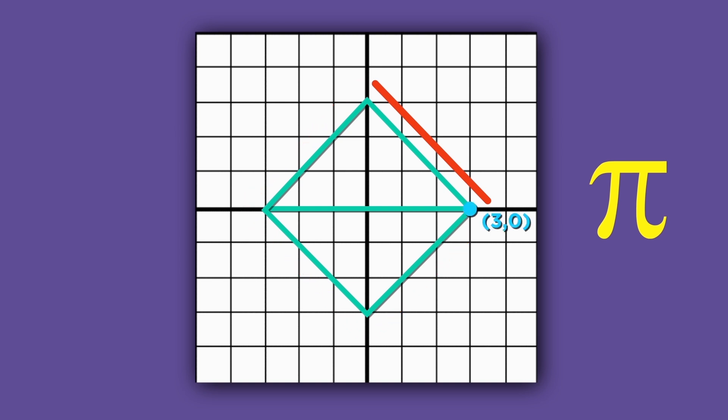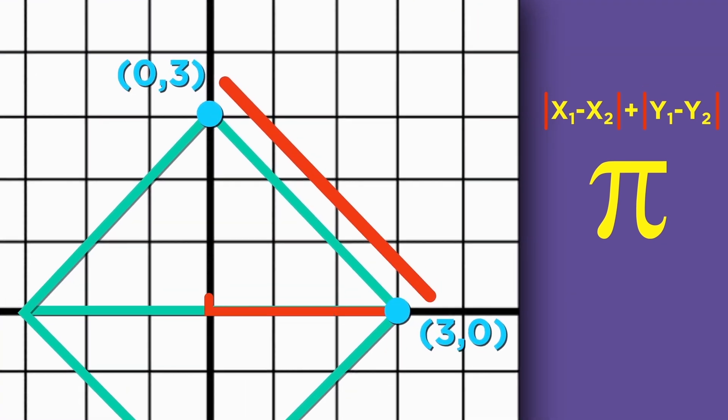It extends from the point (3,0) to the point (0,3). We need to measure the distance between these points using the taxicab metric. To get from (3,0) to (0,3), we have to drive three blocks west and three blocks north, which is six blocks total. So the points are distance six away from each other. That means the line has length six.